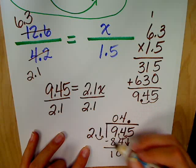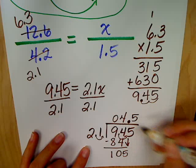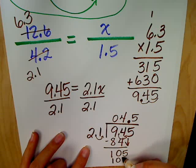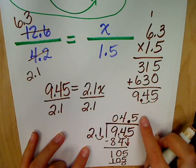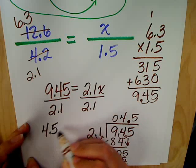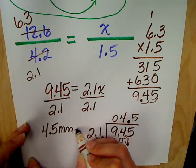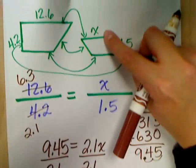I subtract and I get 10. Bring down the five. 21 into 105? Yes, Tony? Five. Five times. What is 21 times five? 105. Perfect. I like nice and easy numbers. So, what does that mean about this number here? Four point five or four and a half millimeters is my answer for X for this missing side right here.